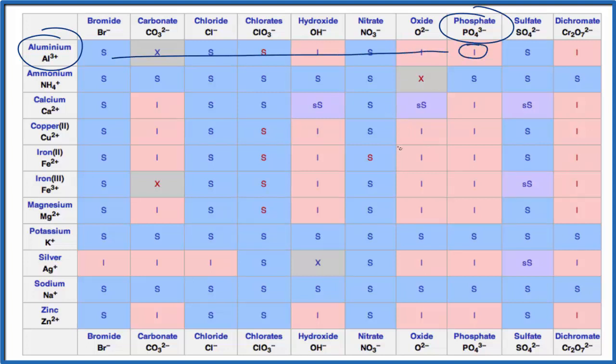Just like we found in the solubility rules, aluminum phosphate is insoluble in water. We should note that a very small amount of it will dissolve, but most of it remains a solid, so we call it insoluble.